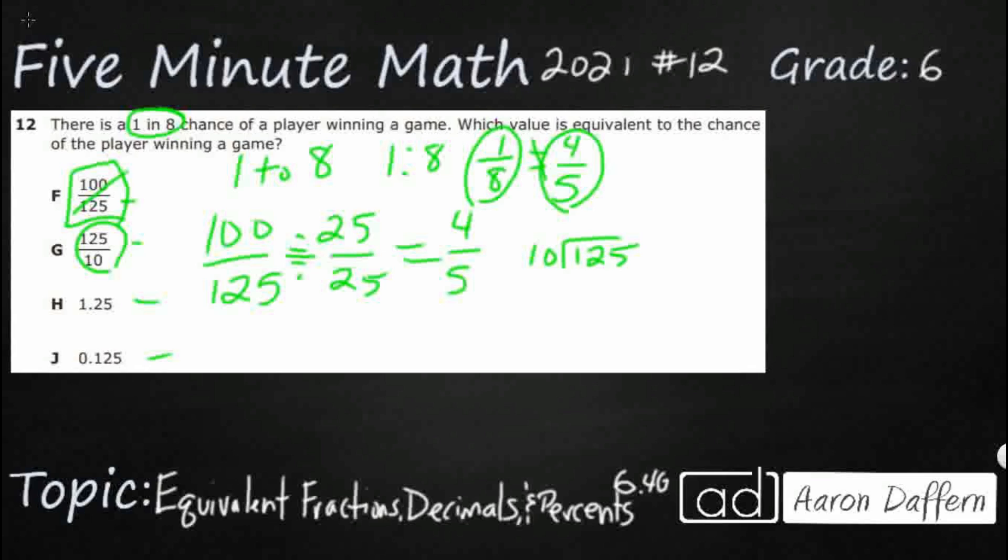So 10 goes into 125, let's see, that's going to be once, so that's going to be twice. And it's going to be 20, 50. And so if I want to make a mixed number, I can say, mixed number could be 12 and 5 tenths. Nowhere near 1 eighth.